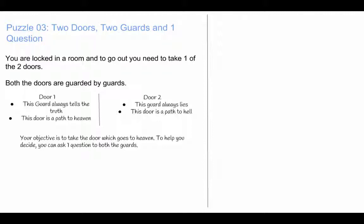So your objective is to take the door which goes to heaven. To help you decide, you can ask one question to both the guards. But the question should be same. Guards have the info about which door leads to hell and which door leads to heaven.